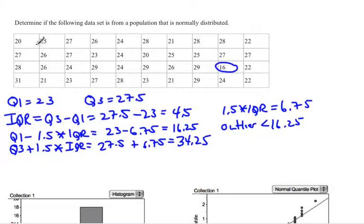Looking through the data, we're looking for a number bigger than 34.25. Going through, I find no numbers bigger than 34.25, so it looks like we have one outlier.